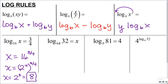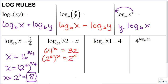In the next problem, I'm going to rewrite this in exponential form, so I have 64 to the x equals 32. I notice that 64 and 32 are same-base numbers — 64 is 2 to the 6th, and 32 is 2 to the 5th. If I have two powers with the same base, their exponents must be equal, so x must equal five-sixths.